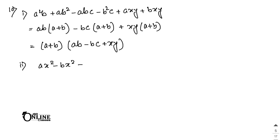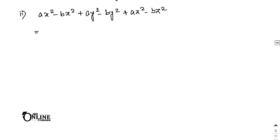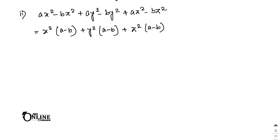Number 10.2: ax² - bx² + ay² - by² + az² - bz². Common x² gives x²(a - b). Common y² gives y²(a - b). Common z² gives z²(a - b). So (a - b) is the common factor, and the answer is (a - b)(x² + y² + z²).